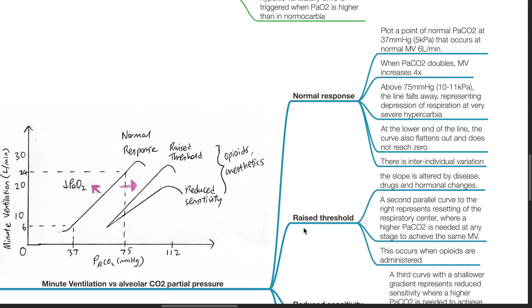Raised threshold curve. The slope is altered by disease, drugs, and hormonal changes. A second parallel curve to the right represents resetting of the respiratory center where a higher PaCO2 is needed at any stage to achieve the same minute ventilation. This occurs when opioids are administered.